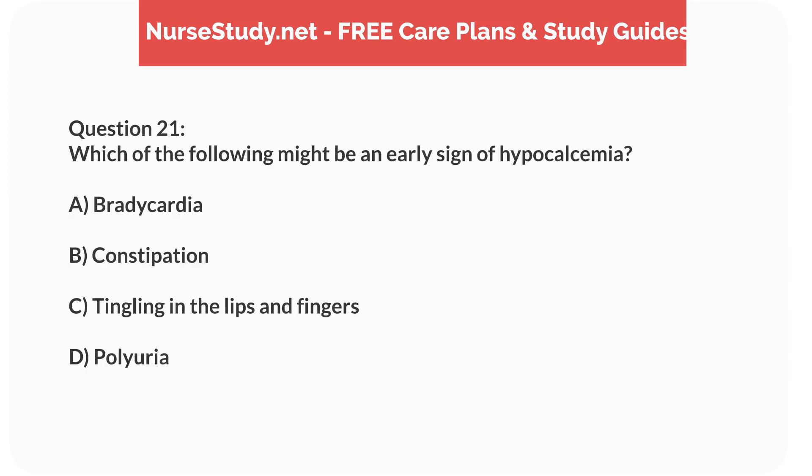Question 21. Which of the following might be an early sign of hypocalcemia? A. Bradycardia. B. Constipation. C. Tingling in the lips and fingers. D. Polyuria.